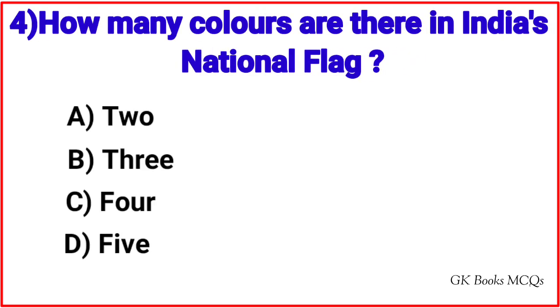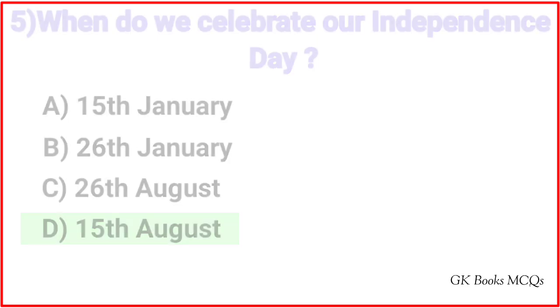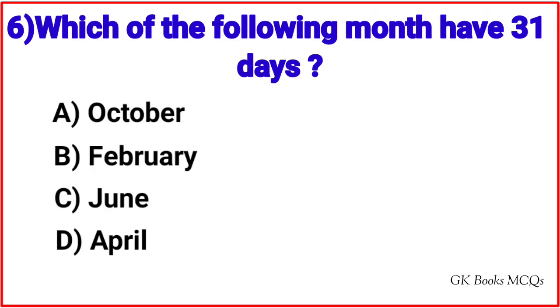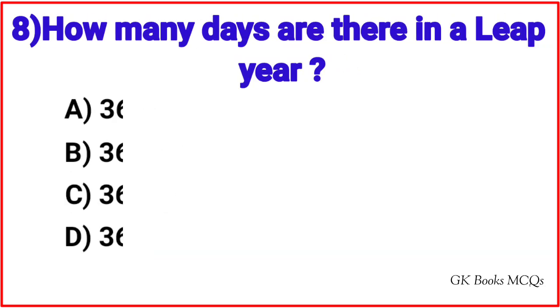Question 4: How many colors are there in India's national flag? Correct answer is option B, 3. Question 5: When do we celebrate our Independence Day? Correct answer is option D, the 15th of August. Question 6: Which of the following month has 31 days? Correct answer is option A, October.